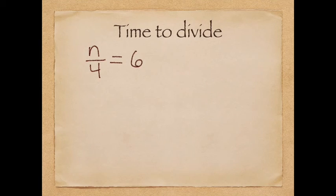Sometimes you're going to see an equation that looks like this. This is n over four equals six. Now, another way to write this would be n divided by four equals six, because remember, a fraction is really the same thing as division. So this is n divided by four equals six.